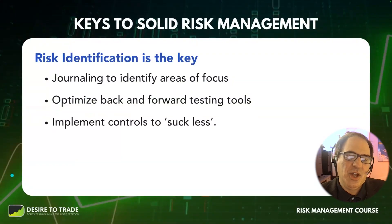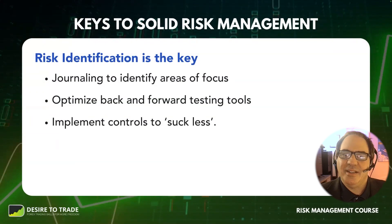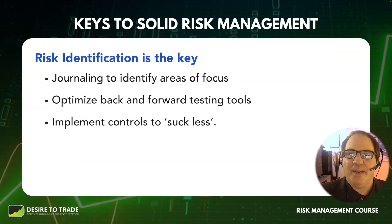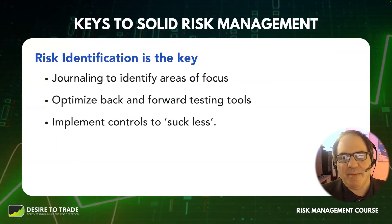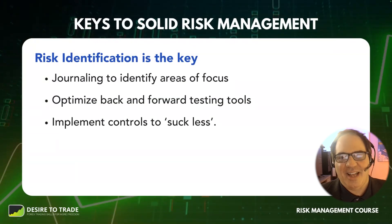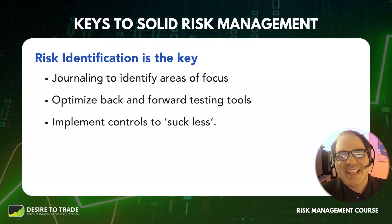Once we do our risk identification — journaling, backtesting, forward testing — we implement the controls. The risk management process is: identification, then assess the impact, and determine which issues to really attack because they're affecting your ability to meet your trading goals. Then implement the controls based on what the information tells you. When I use certain sizing, it's too much for the volatility — the optimization and testing tools told me that, so now I implement controls. To use Jared Tandler's term: suck less. We're not here to hit home runs. Successful traders who make the transition focus on making fewer errors the next time around. It's not about more trades or bigger size — just minimize those errors.